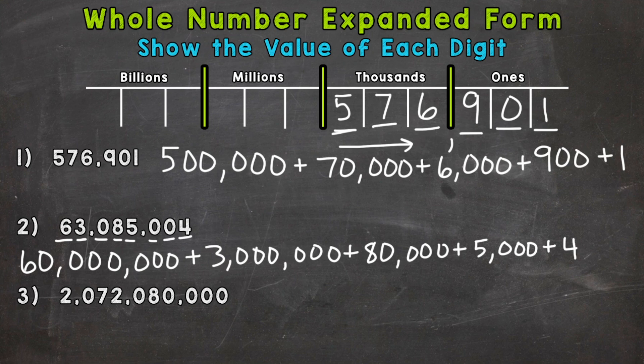So on to number three here where we have 2,072,080,000. And we'll start with the two, which has a value of 2,000,000. So with these, again, with these larger numbers in value, we have to be very careful with our zeros and that we have the correct value represented. So for example, I only have 2,000,000 there. So we need three more zeros. So it equals 2,000,000,000.